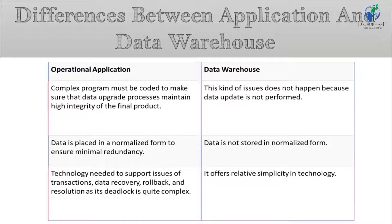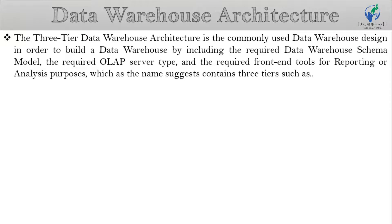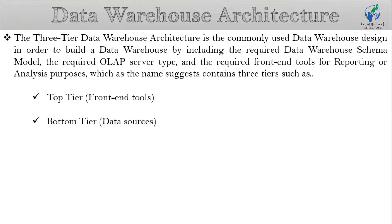Now the main topic is data warehouse architecture. The three-tiered data warehouse architecture is the commonly used data warehouse design. In order to build a data warehouse, it includes the required data warehouse schema models, the required OLAP server type, and the required front-end tools for reporting or analysis. The data warehouse, as the name suggests, contains three tiers: the top tier, the middle tier, and the bottom tier. Data flows from the bottom tier, also known as the data source, through the middle tier, also known as the OLAP server, to the top tier, also known as front-end tools.